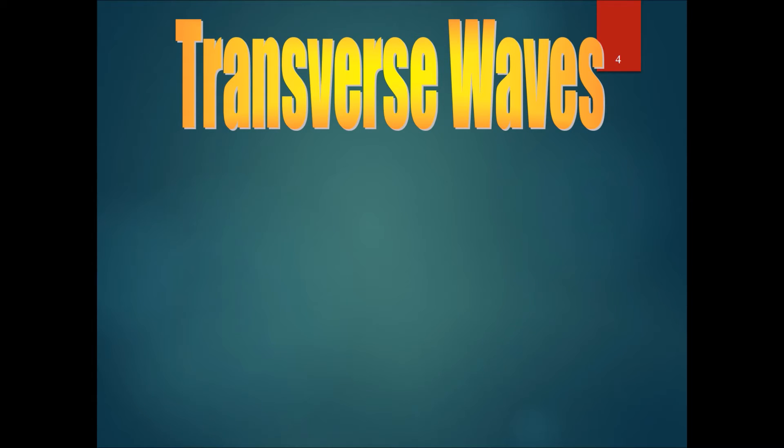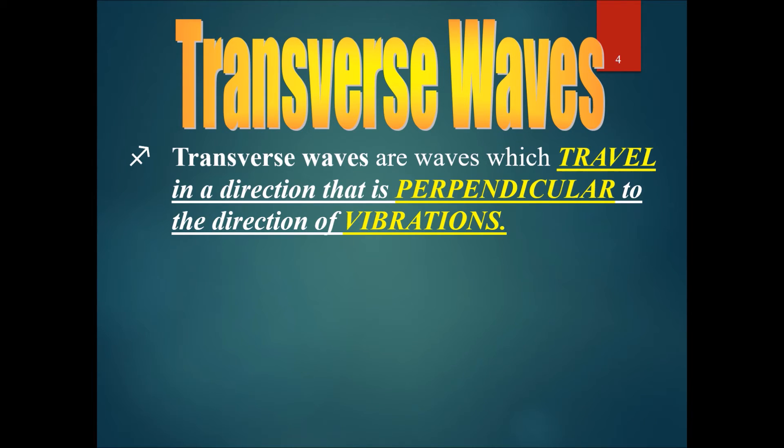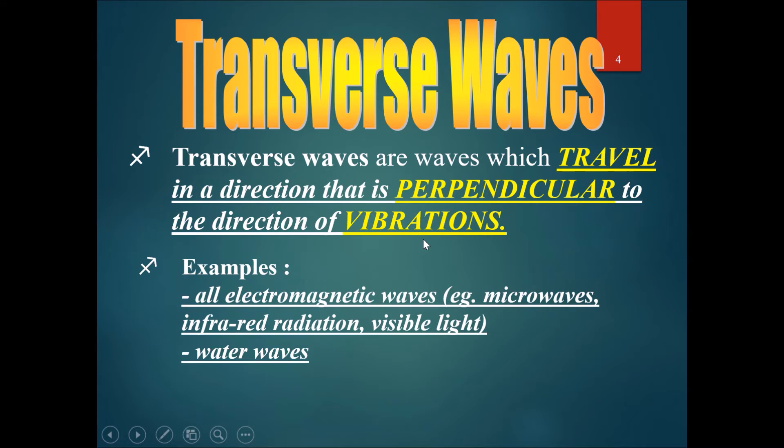Now let's talk about two different kinds of waves. The first is a transverse wave. Transverse waves travel in a direction perpendicular to the direction of their vibrations. Examples include all electromagnetic waves like microwaves, infrared radiation, visible light, and also water waves.